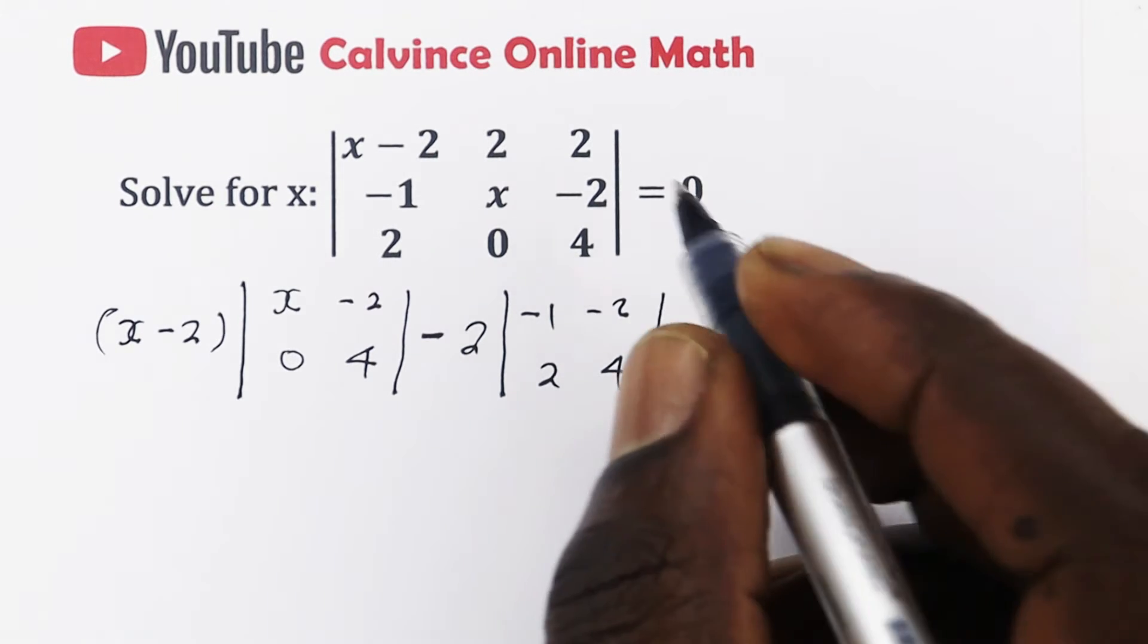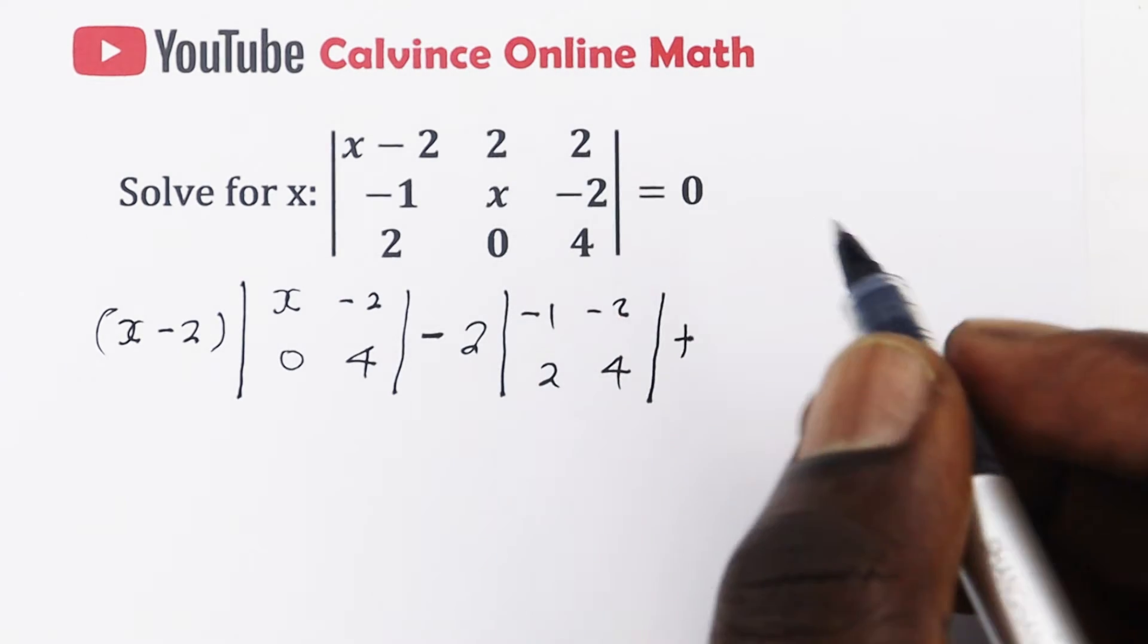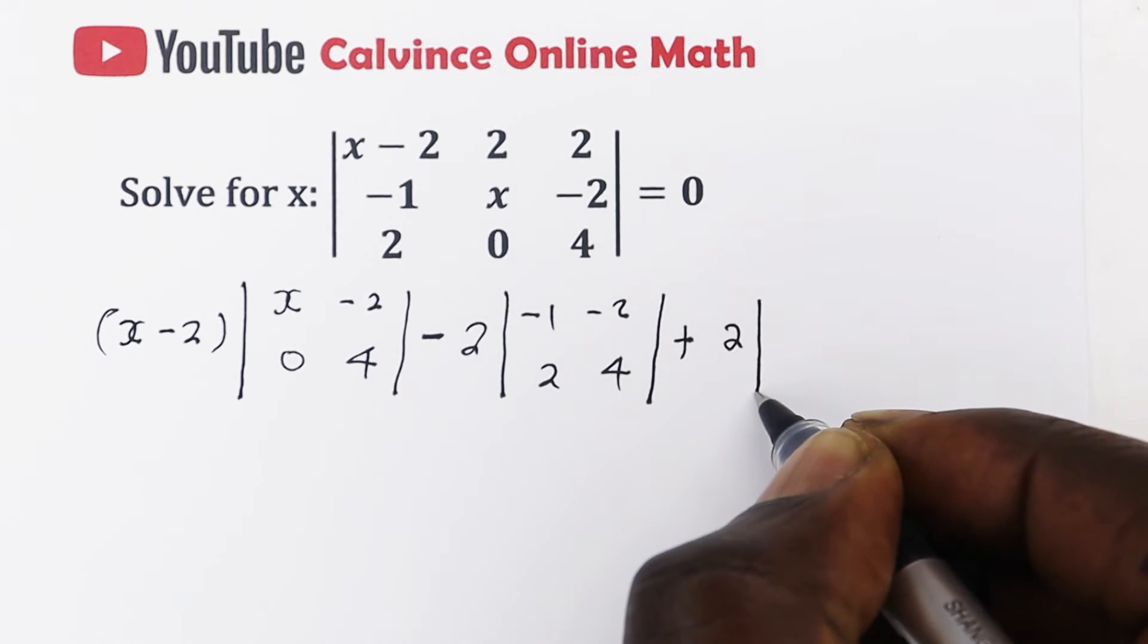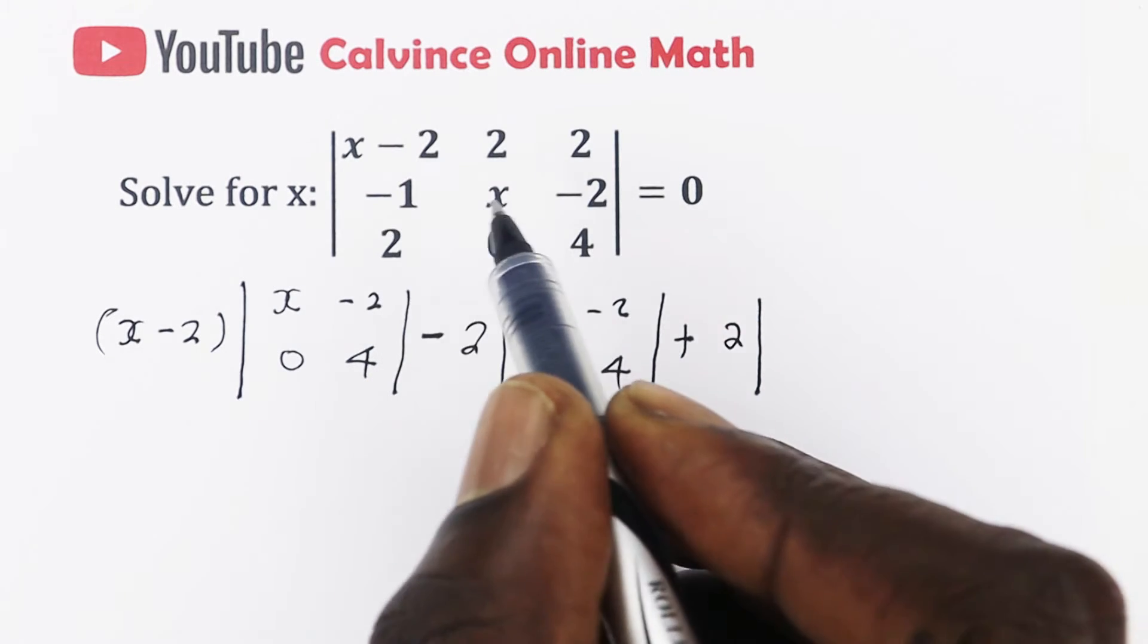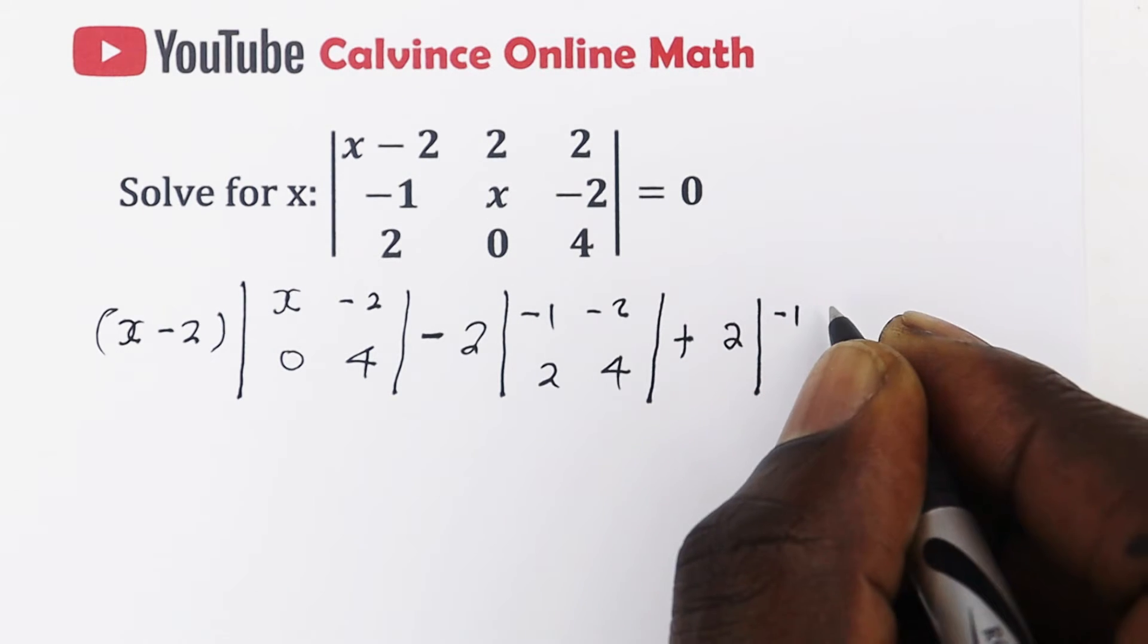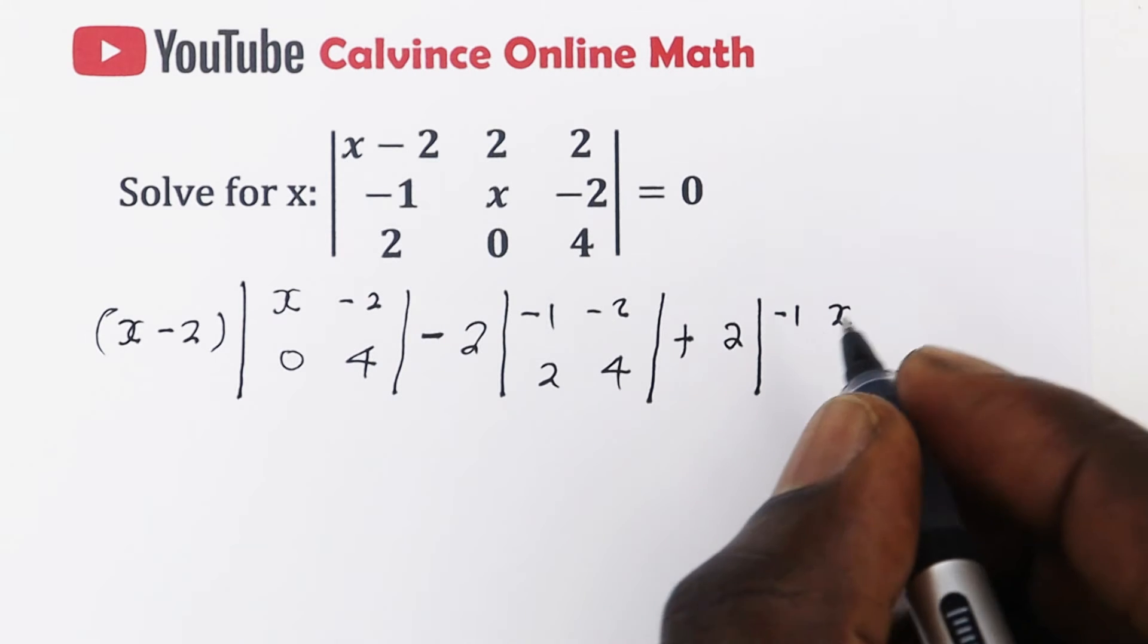And then you're going to add the last one in that row. That is 2. And when you cover the row and the column, you're left with negative 1, x, and you're left with 2, 0.